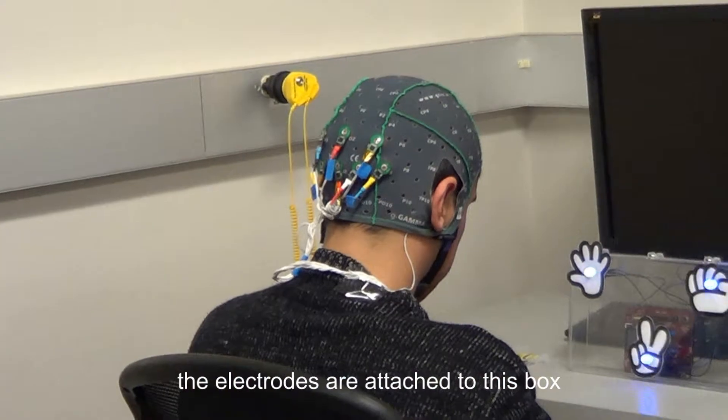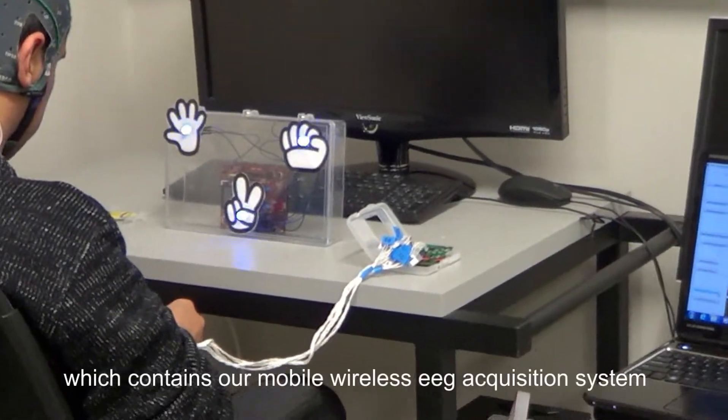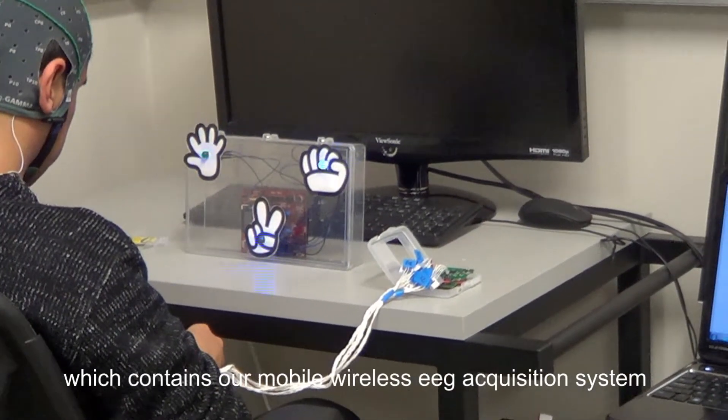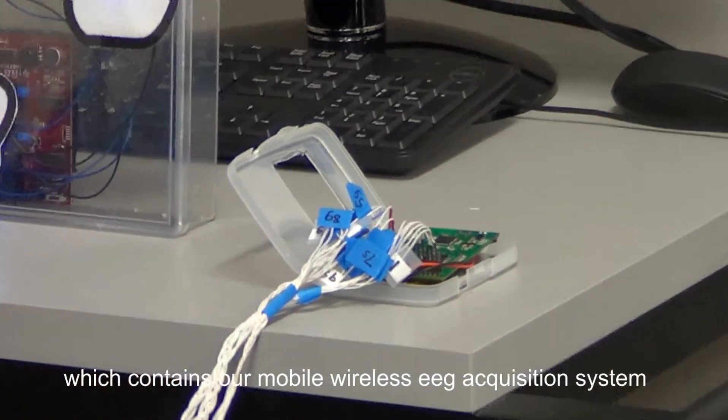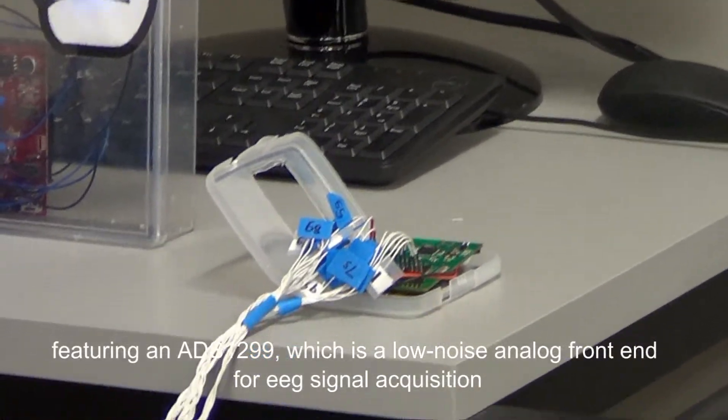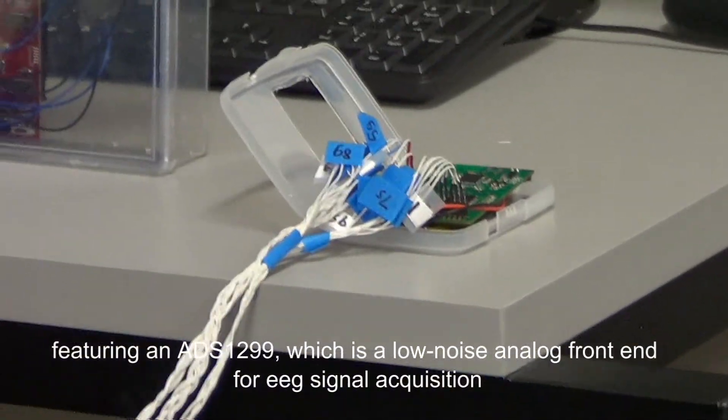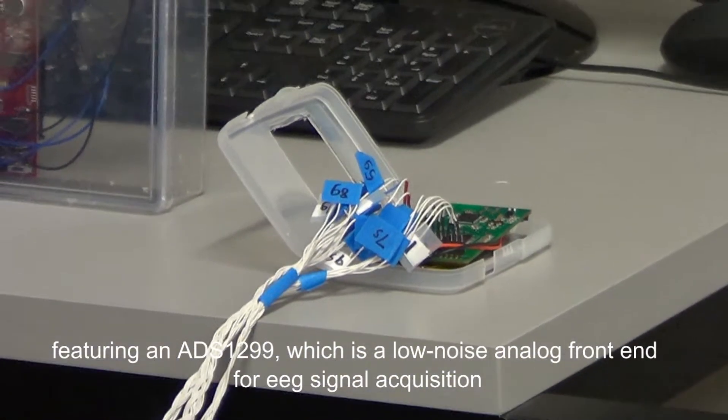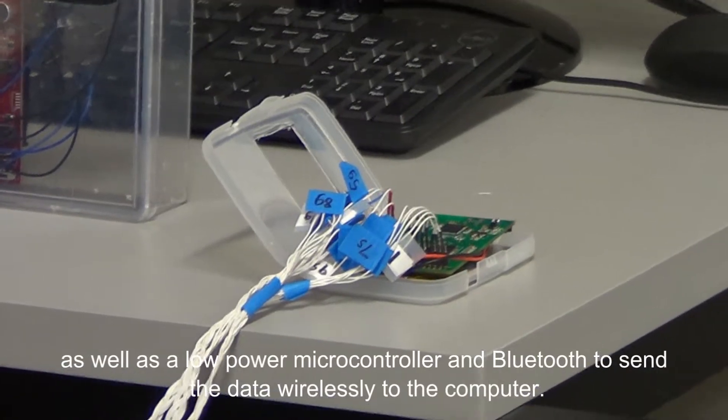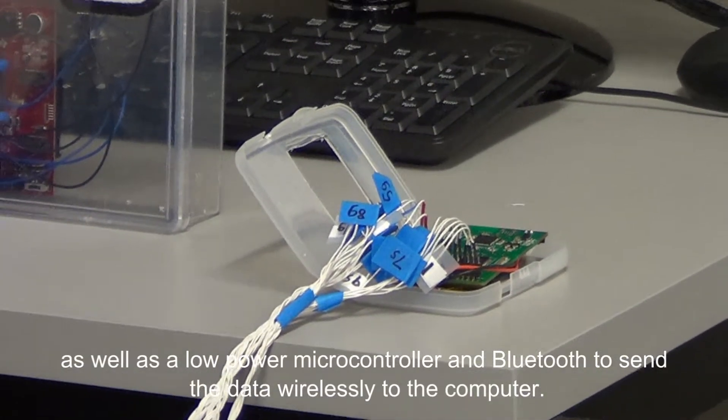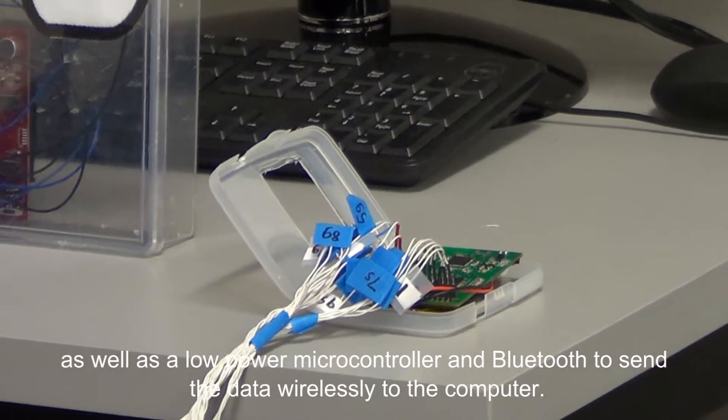The electrodes are attached to this box, which contains our mobile wireless EEG acquisition system, featuring an ADS1299, which is a low-noise analog front end for EEG signal acquisition, as well as a low-power microcontroller and Bluetooth to send the data wirelessly to the computer.